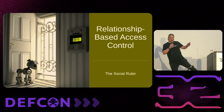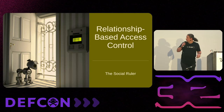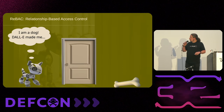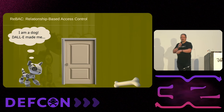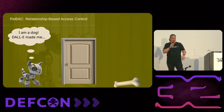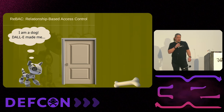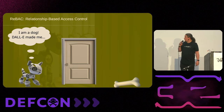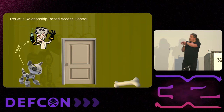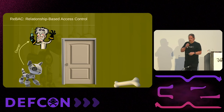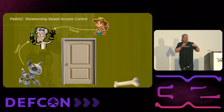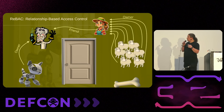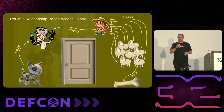Relationship-based access control changes the paradigm quite significantly. This dog doesn't actually have a name — someone in the audience named it Liam, so this is Liam. Liam has an owner — the mad scientist. The mad scientist is friends with a farmer. The farmer has a whole lot of sheep, and for the vegetarians in the audience I apologize, but sheep have bones.